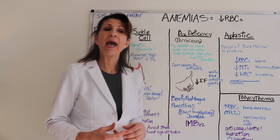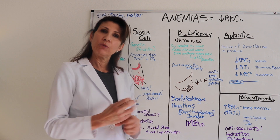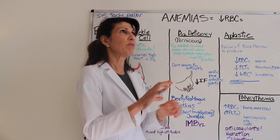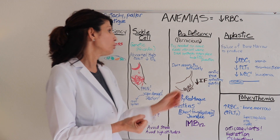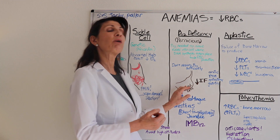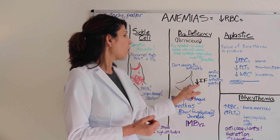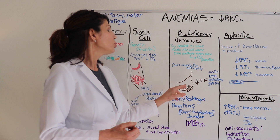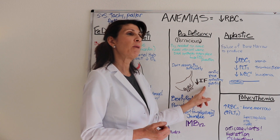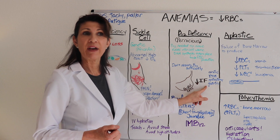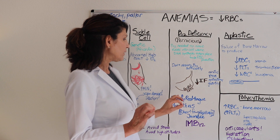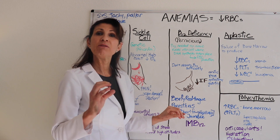Problems with the stomach lining — such as gastritis — or a gastrectomy (surgery that removes part of the stomach, like a gastric sleeve) removes the parietal cells. The parietal cells are what secrete intrinsic factor, and the patient with pernicious anemia lacks this intrinsic factor, which is required to absorb B12.